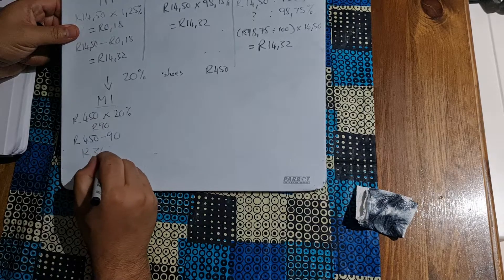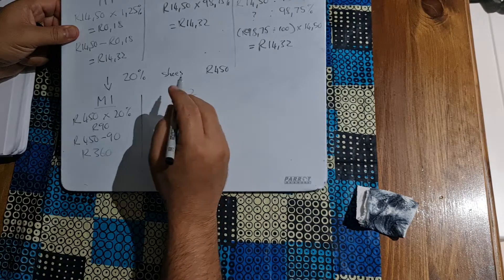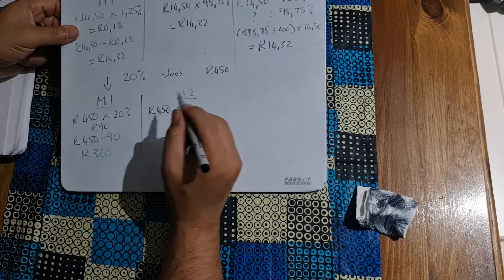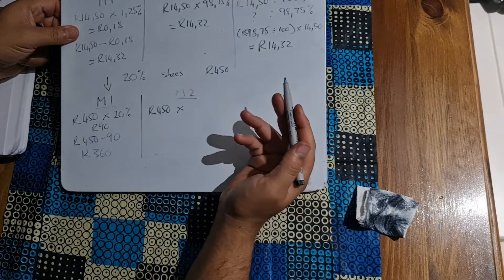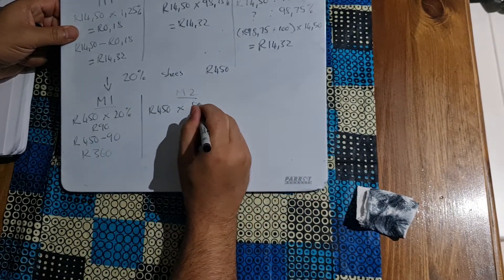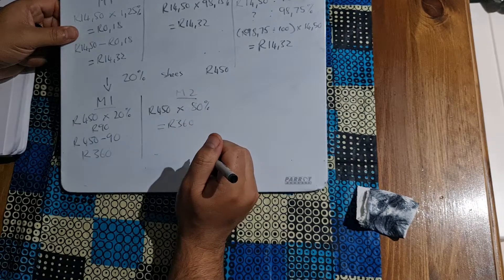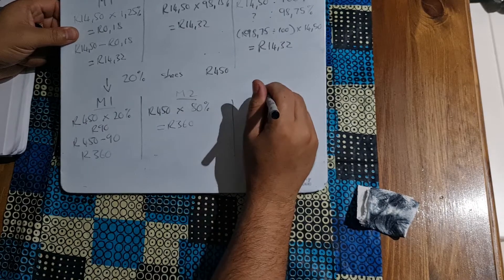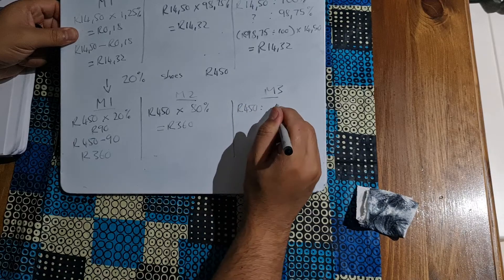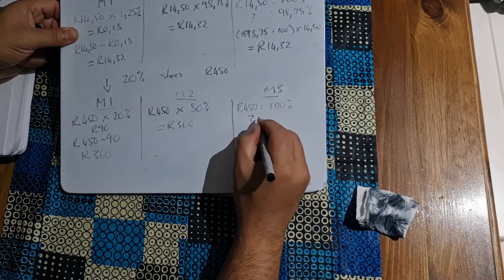We then take R450 and subtract R90, which gives us R360. Method number two: we take 450 and multiply it by 80% — not 120%, because we're going down, so we deduct 20% from 100% — and that gives us R360. Method number three: R450 represents 100%, and we apply the same ratio approach to find the discounted amount.